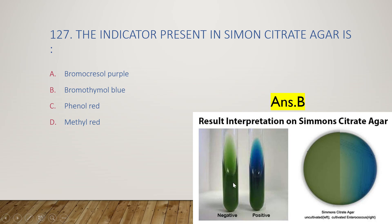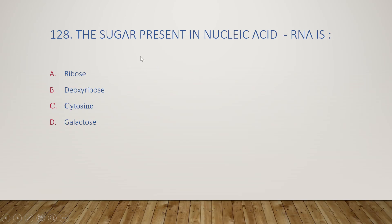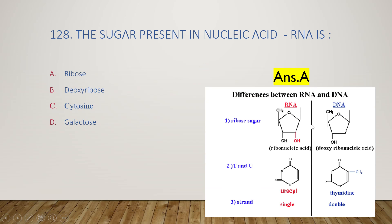The next question: the sugar present in nucleic acid RNA is ribose, deoxyribose, cytosine, or galactose? The right answer is option A, ribose. RNA contains the ribose structure, while DNA contains the deoxyribose structure — one hydroxyl group is missing in DNA. That is the sugar backbone difference between DNA and RNA.